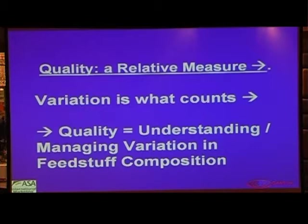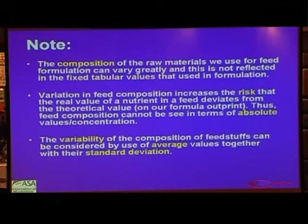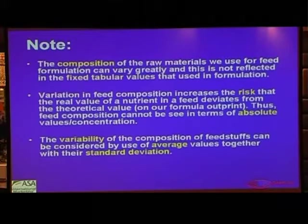Quality is a fairly relative measure, but we need to understand and manage it. The composition of a raw material used for feed formulation can vary greatly — it's not reflected in fixed tabular values. We need systems in place which allow us to adjust analyzed values. The variability of feedstuff composition can be considered by using average values together with a standard deviation. You calculate an average value and the variation around the average, and in your formulation you formulate with a penalized value based on that variation. The larger the variation, the larger the penalty you have to deal with.